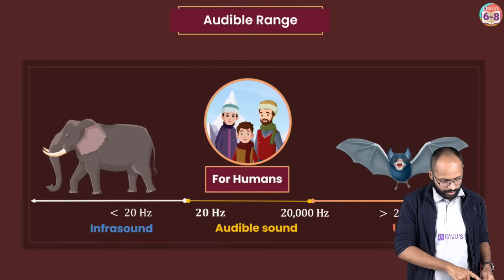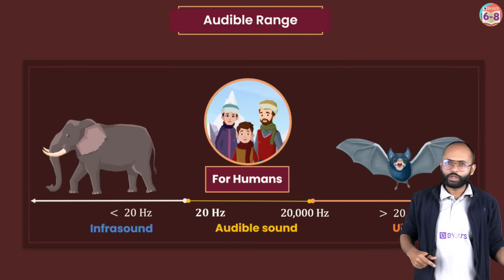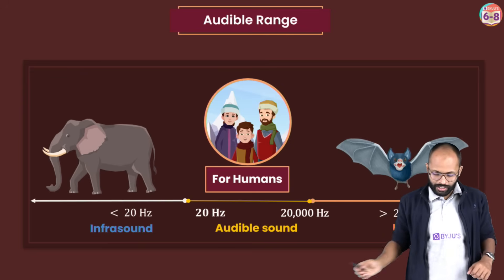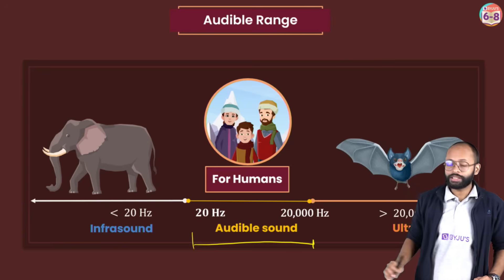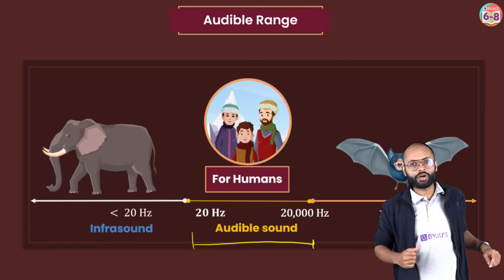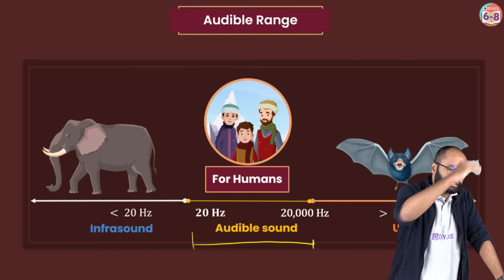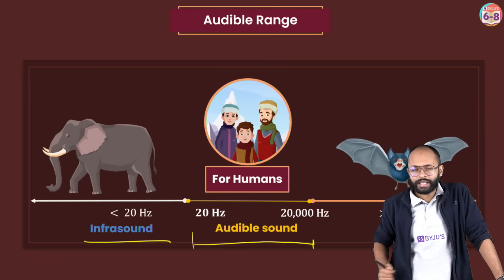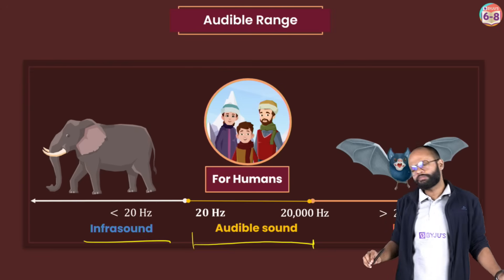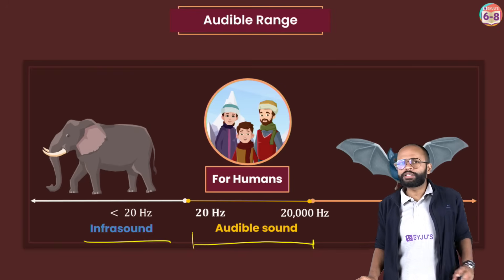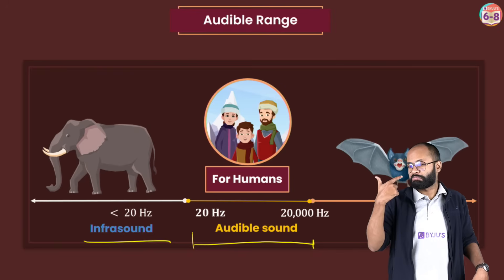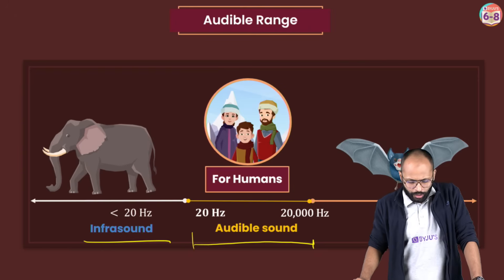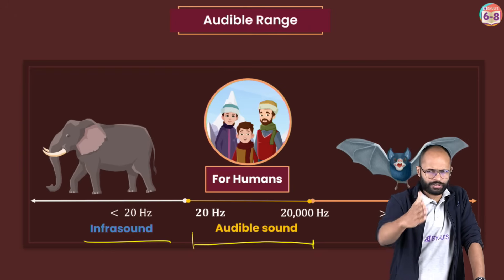There is an audible range. Humans are not superhumans — we have a limit of hearing. We can hear only frequencies from 20 hertz to 20,000 hertz (20 kilohertz). Below 20 hertz is infrasound — not audible to us; elephants and pigeons can hear it. More than 20,000 hertz is ultrasound — dogs, dolphins and bats can hear it, but we cannot. Very direct questions are asked from this topic.